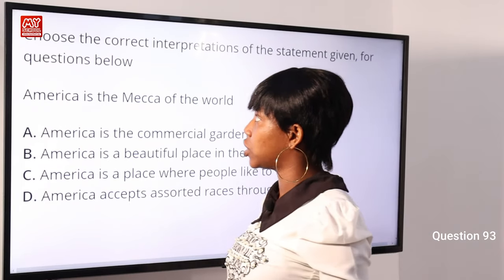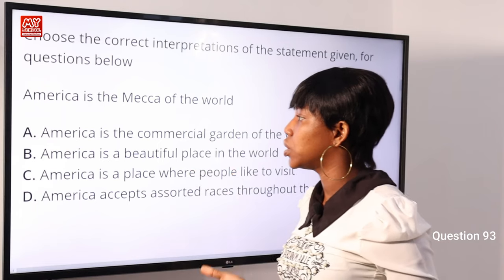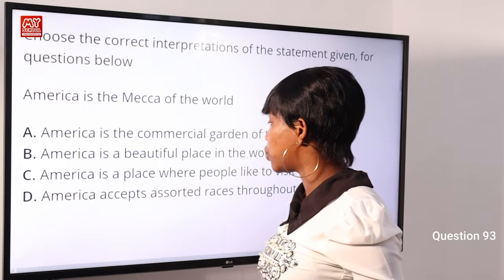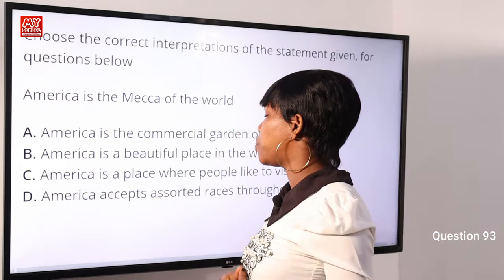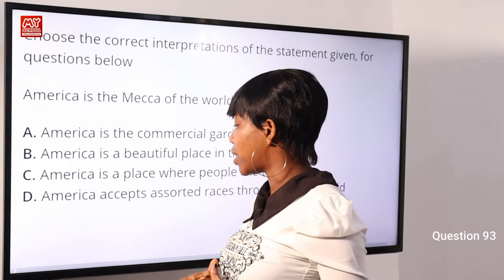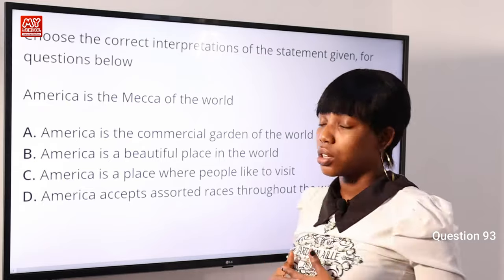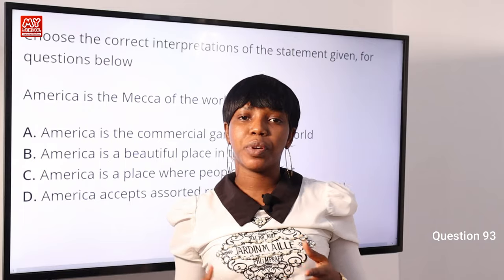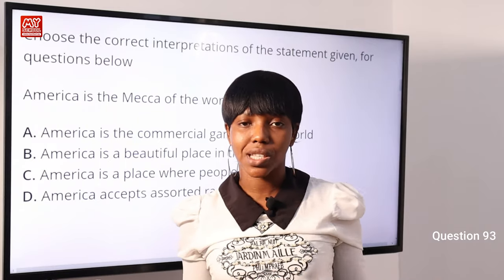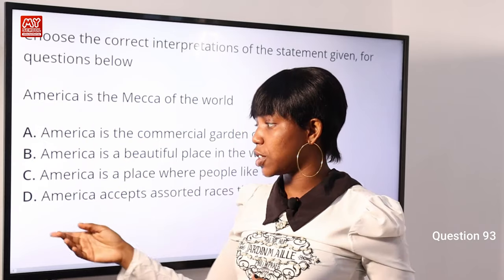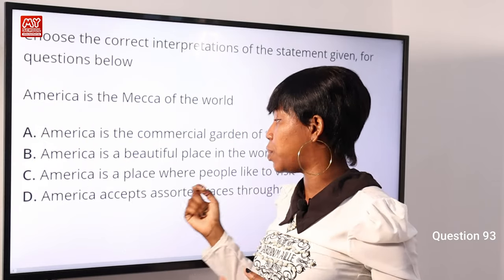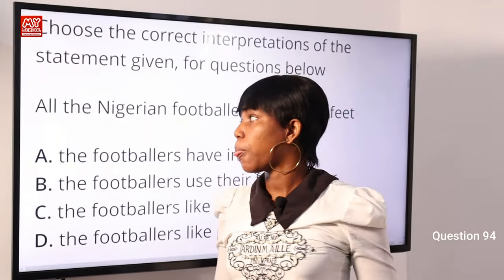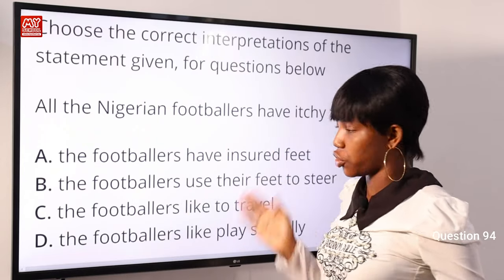Question 93: Choose the correct interpretation: 'America is the maker of the world.' Options: A) America is the commercial garden of the world, B) America is a beautiful place, C) America is a place where people like to visit, D) America accepts assorted races throughout the world. 'Maker of the world' means a place people love to visit. Option C) 'America is a place where people like to visit' is the correct answer.